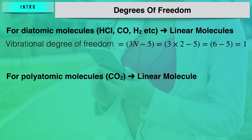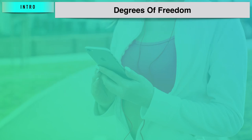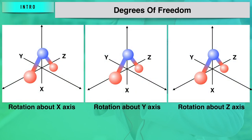For linear polyatomic molecules like carbon dioxide, we use the same formula. Carbon dioxide has three atoms, so 3 times 3 minus 5 gives 4 vibrational degrees of freedom.